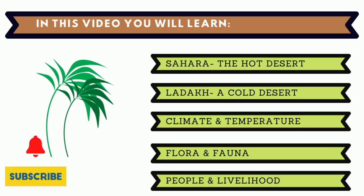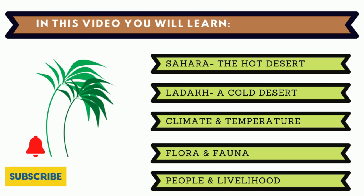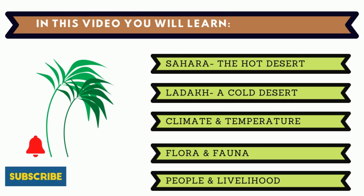Hello everyone, welcome to the Pedagogy channel. In this video we are going to cover the last chapter of NCERT Class 7 Geography: Life in the Deserts. We will cover two extreme desert areas — the hot Sahara in Africa and the cold desert Ladakh region of India — including their climatic conditions, flora, fauna, people and livelihoods. Please like and subscribe for regular updates.